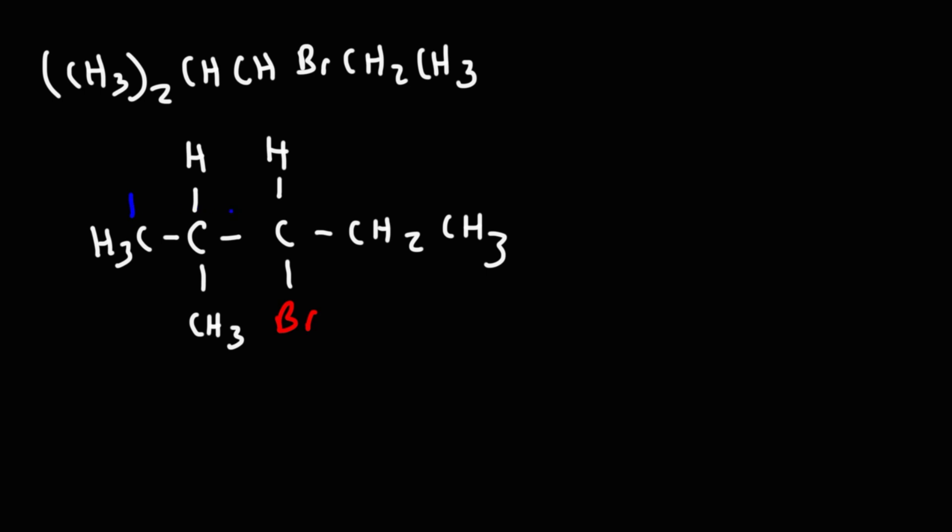So let's count it this way. Carbon 1, 2, 3, 4, 5. So we have a 5-carbon chain. On carbon 2, we have a methyl group. And on carbon 3, we have a bromine atom. So this is going to be 3-bromo, 2-methyl pentane.